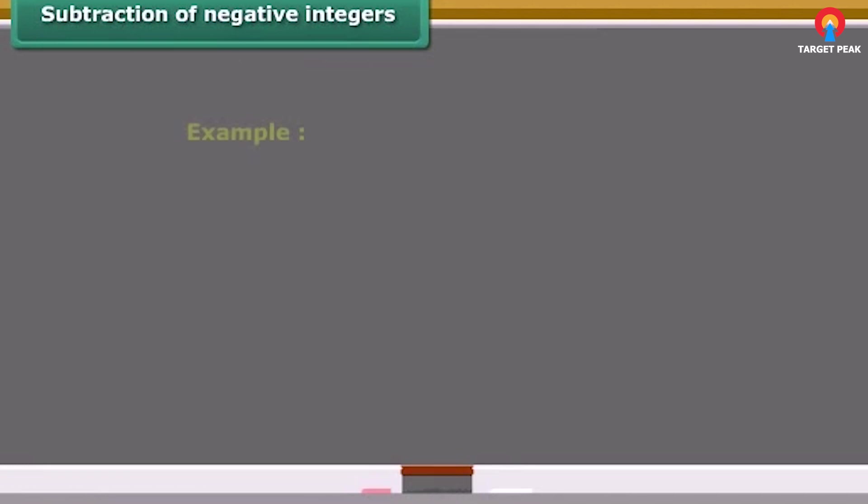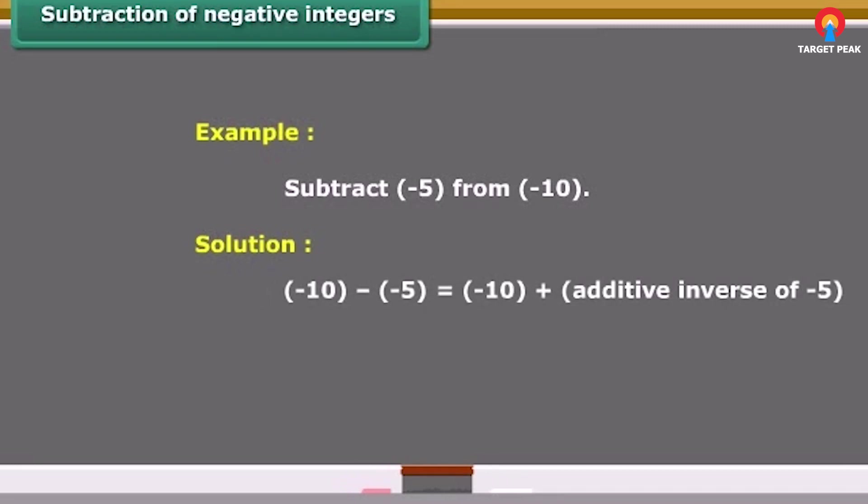Now let us find the value of minus ten minus minus five using a number line. This is same as minus ten plus five, as the additive inverse of minus five is five. First we move five steps to the right on the number line starting from minus ten. We reach to minus five.